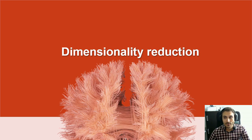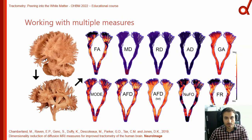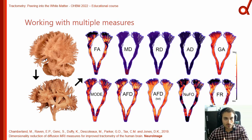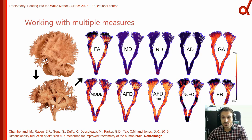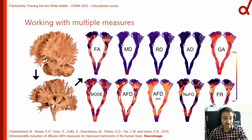Let's talk about dimensionality reduction in the context of tractometry. One of the strengths of the tractometry approach is to map multiple metrics over a specific bundle — here again the corticospinal tract, with 10 different measures derived from various models. One could analyze each of those independently, at the risk of decreasing statistical power and losing the potential covariance between these metrics. But what if, instead, you were to combine those 10 metrics into, say, two components which capture the most variance?